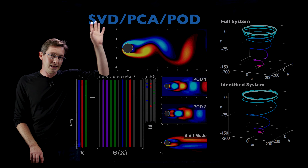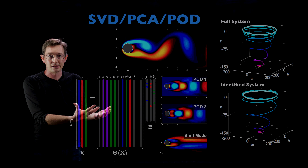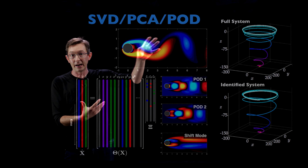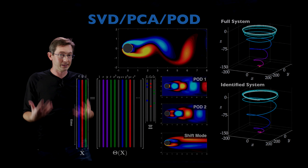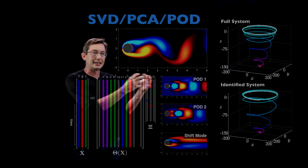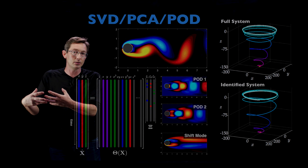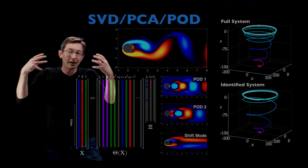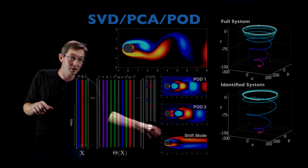We know that there are often low-dimensional coordinate systems where you can describe this data more efficiently. Even though this requires 10,000 or 100,000 degrees of freedom to simulate on my computer, we know that there are low-dimensional patterns that describe most of the behavior. If I write the dynamics in this coordinate system in terms of these mode amplitudes, they admit a very simple differential equation.